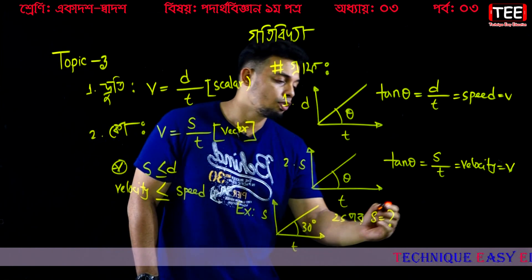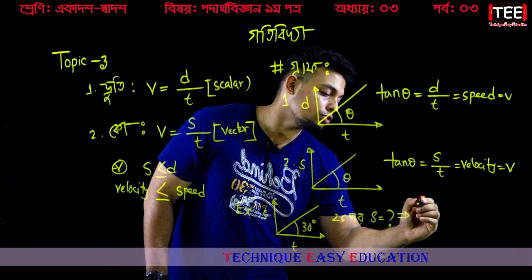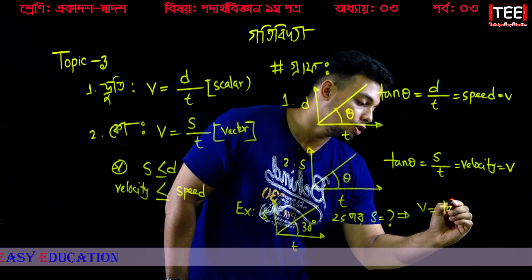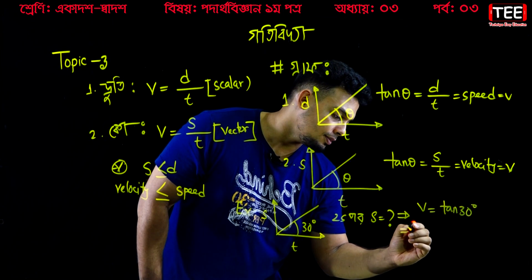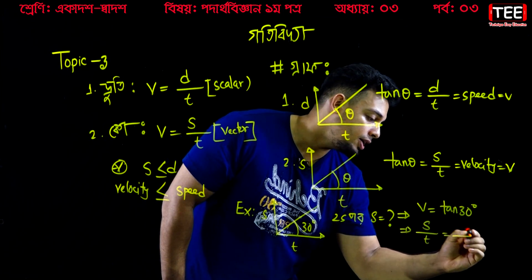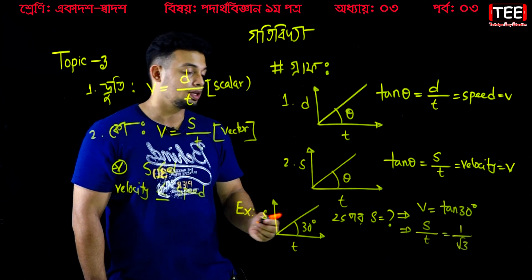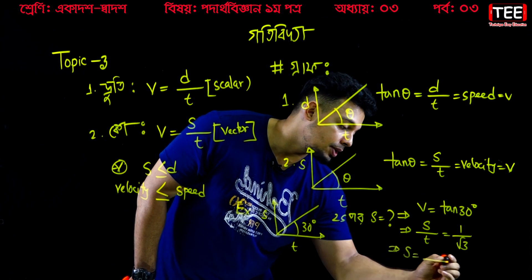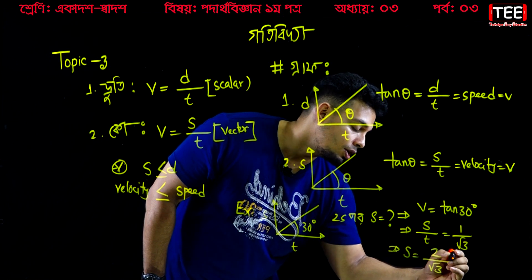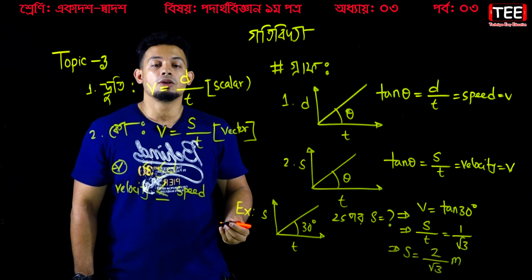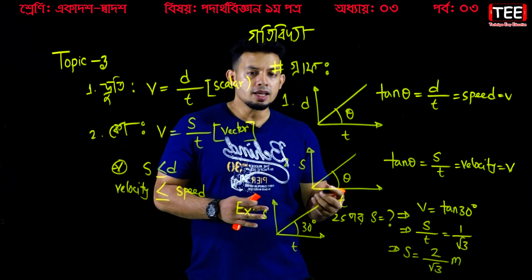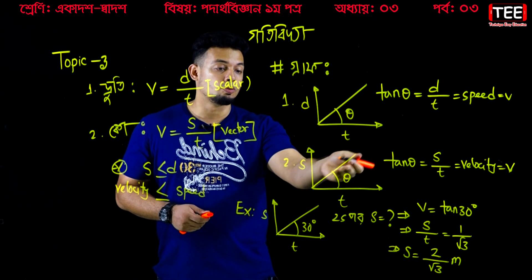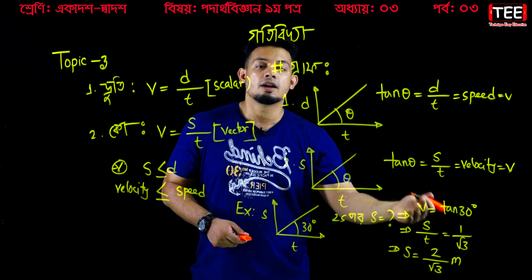We are going to use the value of the vector. That vector we have done with the graph. I think theta is known — this is 30 degrees. V equals S by T, that means 1 over root 3. We say T is 2 seconds, so S equals 2 seconds divided by root 3. So that is 2 by root 3 meters. We are talking about the graphical concepts — we have a very beautiful idea about graphs.